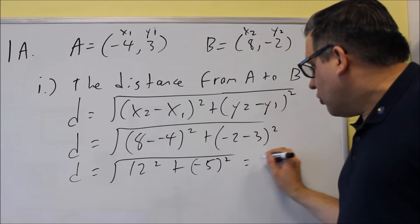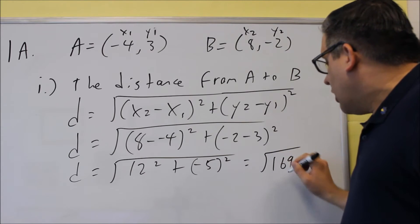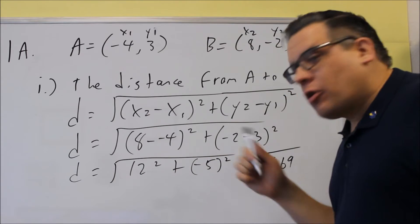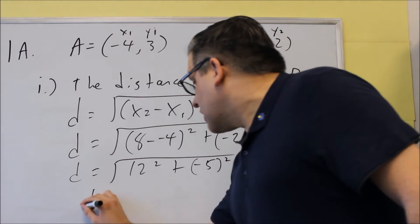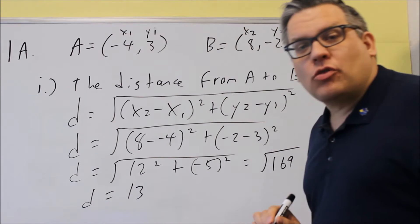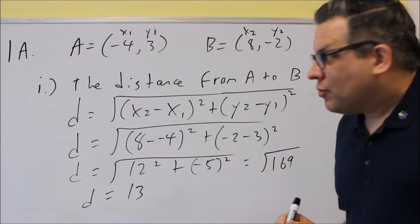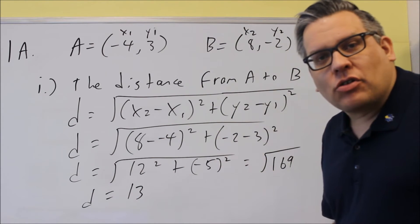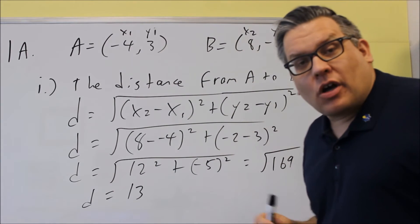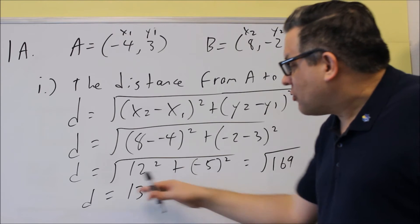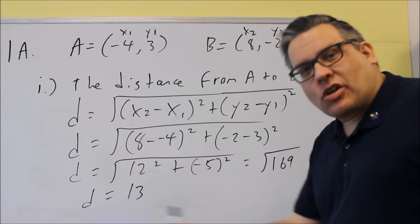When you work that out, you're going to get the square root of 144 plus 25 will give you 169. And then finally, that's going to give you 13. So 13 would be your answer. There's no special units you have to do on this one because there's no units given. There's just two points, so your distance would just be basically 13 units. Let's take a look at the next part.